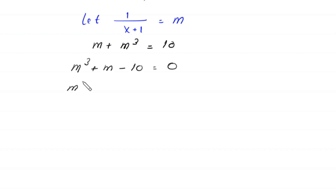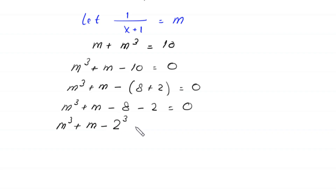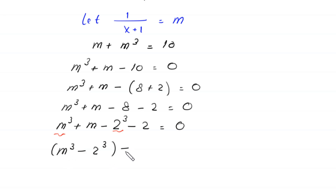We write -10 as -8 minus 2, so this becomes m cubed plus m minus 8 minus 2 equal to 0. Since 8 equals 2 cubed, we rewrite as m cubed minus 2 cubed plus m minus 2 equal to 0, grouping the cubes together.